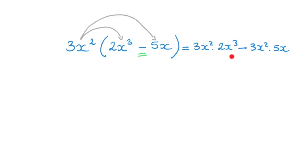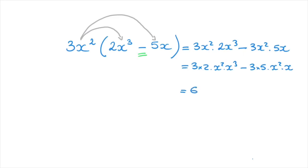We can now change the order of the terms in each product to write this as 3 times 2 times x squared times x cubed, minus 3 times 5 times x squared times x. Simplifying, 3 times 2 is 6, and x squared times x cubed equals x to the power of 2 plus 3, which is x to the power of 5.